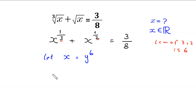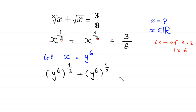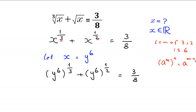Then this equation will become y to the power 6, whole to the power 1 over 3, plus y to the power 6, whole to the power 1 over 2, is equal to 3 over 8. By using the power rule — a to the power m, whole to the power n, equals a to the power m times n — we multiply: 6 times 1 over 3 gives 2, and 6 times 1 over 2 gives 3.